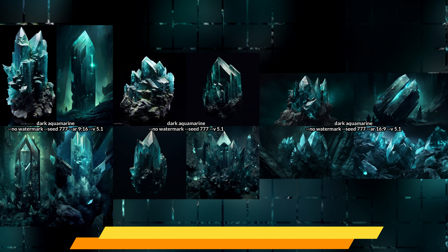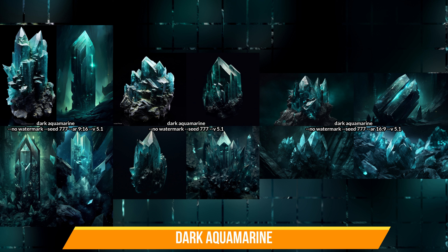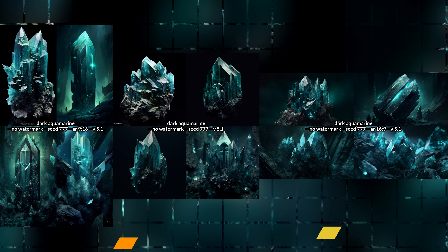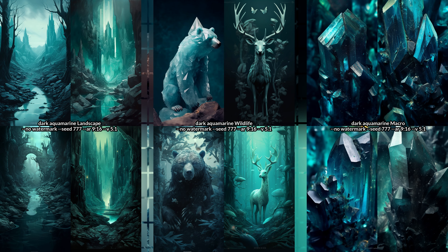Aquamarine is a deep blue-green color named after the mineral aquamarine. It can evoke mystery, depth, and calmness, and it can also contrast well with other colors. It can also create a lot of gemstones on its own, because it's a word with a double meaning. I really like the moody fantasy landscapes we see here with some very sharp cliffs that look as if they're made of the gemstones. One of the bears in the wildlife images definitely is — the other wildlife looks great too. In macro I guess we see again close-ups of the gemstone.